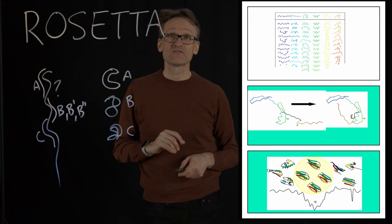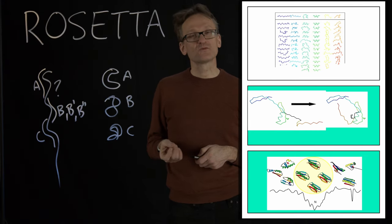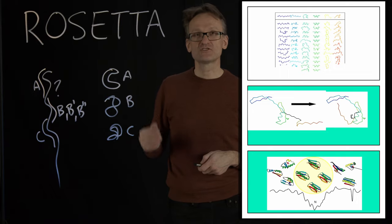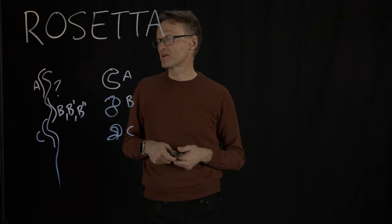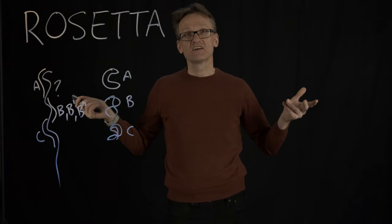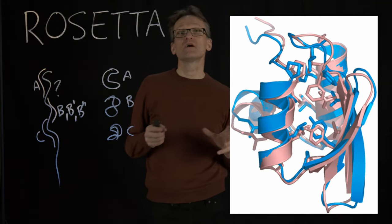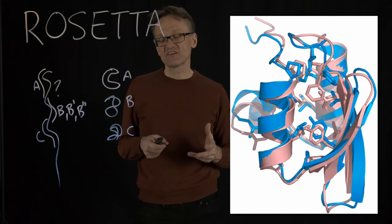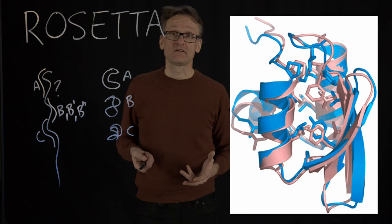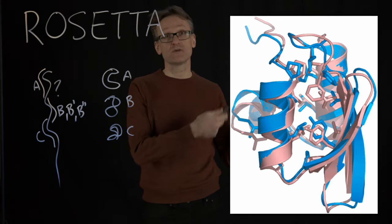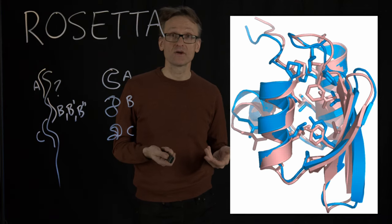Rosetta is not a rocket-science method, but the key is consistency — having spent 20 years tuning everything and making all the algorithms work. A couple of years ago, David Baker published a paper in Science showing they could predict 16 small proteins, all within a few angstroms. Five of the 16 were within 1.5 angstrom resolution — better than what you'd get from a cryo-EM experiment. A really good X-ray structure might be 1 angstrom, but at 1.5 angstroms, you're good enough. So at least for small proteins, Rosetta was competitive with experimental structure determination.